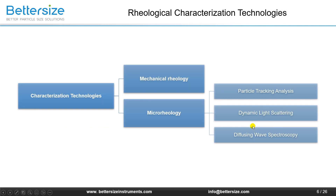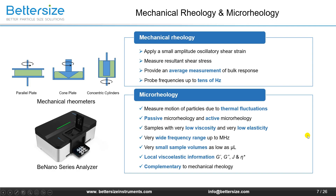What instruments should we use to measure rheological properties? We can divide measurement technologies into two types. The first is conventional mechanical rheology, which is still widely used — for example, a rotational rheometer that compresses the sample and applies rotational shear to deform it. However, microrheology techniques have been developing more rapidly. There are three types of microrheology research methods: particle tracking analysis, dynamic light scattering, and diffuse wave spectroscopy. Mechanical rheology involves applying small amplitude oscillatory shear strain and measuring the resulting shear stress, providing an average bulk response measurement, but it can only probe frequencies up to a few tens of hertz.